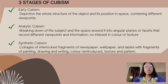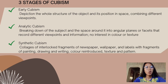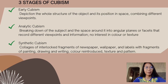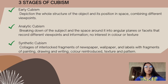The third stage is Synthetic Cubism — a collage of interlocked fragments of newspaper, wallpaper, and labels combined with fragments of painting, drawing, and writing. Color is reintroduced along with textures and patterns. In Synthetic Cubism, color and decoration played a greater role, and the technique of collage was introduced.